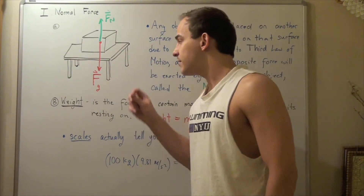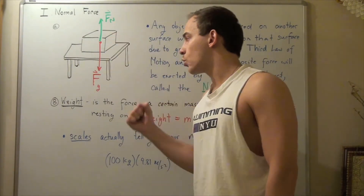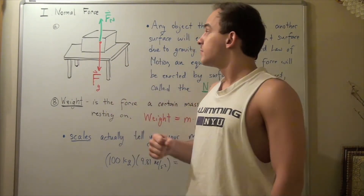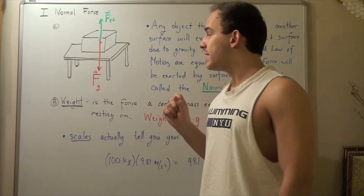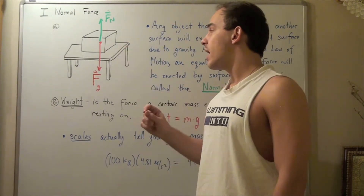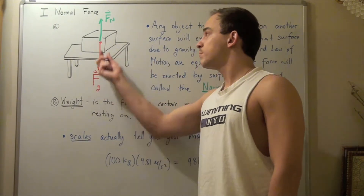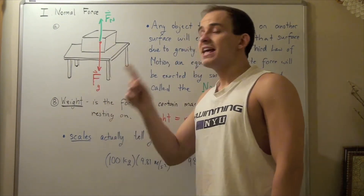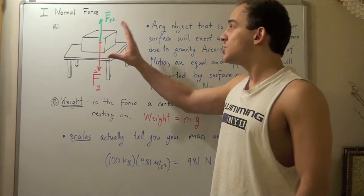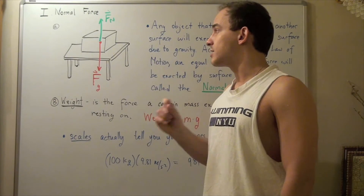But even though no net force is acting on my box, there are still individual forces acting on my box — it's just that the net force in either direction is zero. Gravity exerts a force on the box, pulling it downward, and this force is given by the mass of the box multiplied by g. That means some other equal and opposite force must be acting on the box, because if there wasn't, the box would be accelerating. But it's not accelerating — it's in a stationary position.